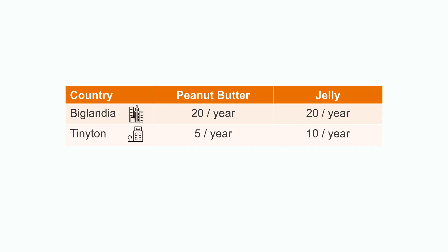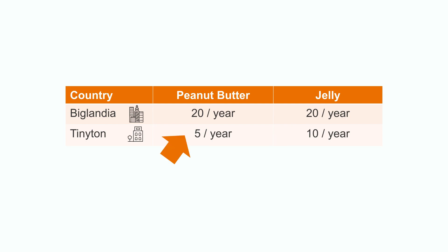Since each country has a limited amount of resources and workers, each day they can either focus on making peanut butter or jelly, but not both. Since Biglandia is a huge country with lots of resources, they can make 20 tons of peanut butter and 20 tons of jelly per year. Tinyton, on the other hand, being smaller, they can only make 5 tons of peanut butter and 10 tons of jelly per year.